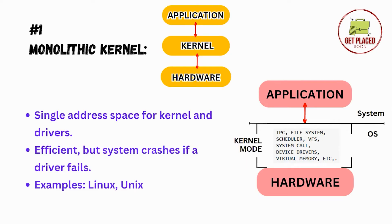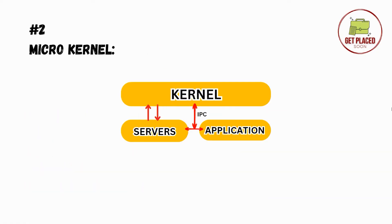Since monolithic kernel is very straightforward and widely used, it is efficient. However, there is a drawback: because device drivers and the kernel all run in the same space, if there is a bug in a device driver, the entire system crashes. Examples of monolithic kernels are Linux and Unix.